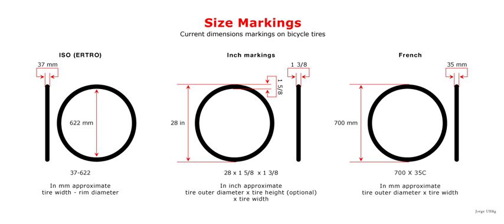A typical example of a tire marking according to ISO 5775-1 is 32-597. The first number is essentially the width of the inflated tire minus any tread. The second number is the inner diameter of the tire when it is mounted on the rim.